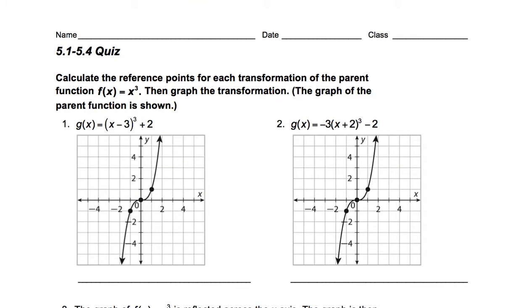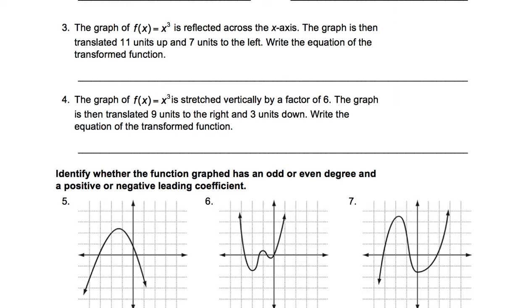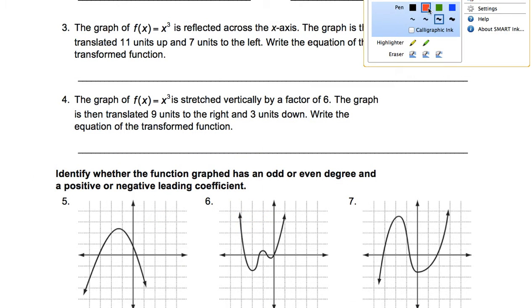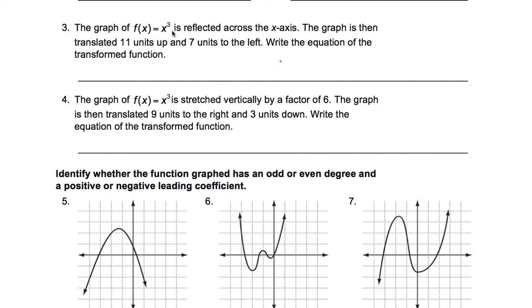Okay, now let's go to the next section, 3 and 4. I'm going to do one of those. So 3 and 4, it says the graph of this is reflected across the x-axis. The graph is translated up 11 units and 7 units to the left, write the equation. So what you're going to do, this is your parent function.